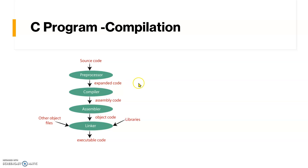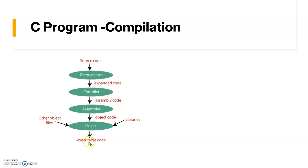Once the expanded code is generated, it is given as input to the compiler, which generates the assembly code. The assembly code is given as input to the assembler, which generates the object code — the machine-understandable code. The object code is then given to the linker. The linker merges all library functions, such as printf, and links other object files to produce the final output.